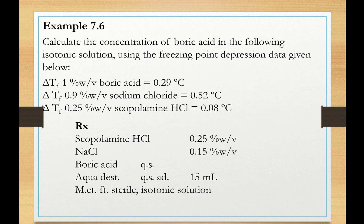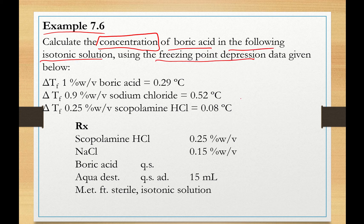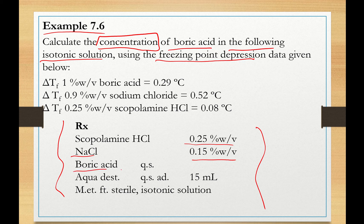Let us describe the method using Example 76. You are asked to calculate the concentration of boric acid — not the amount, but the concentration (though from concentration we can calculate the amount) — in the following isotonic solution using the freezing point depression method. Here is the prescription: an ophthalmic solution containing scopolamine hydrochloride 0.25% w/v, sodium chloride 0.15% w/v, boric acid (concentration to be calculated), with a total volume of 15 mL.